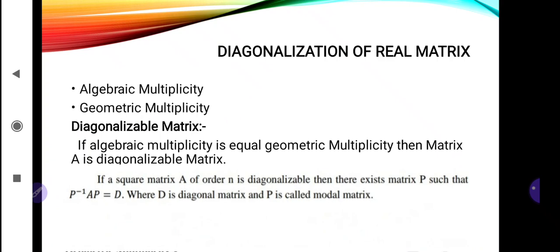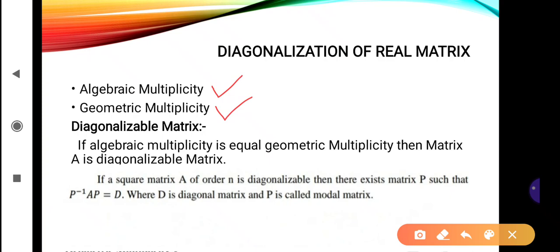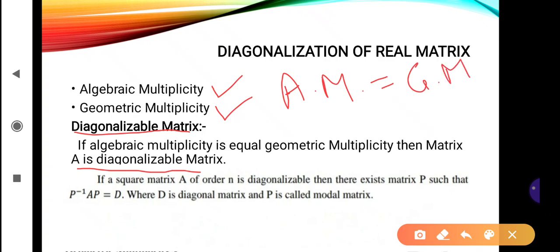The first topic is diagonalization of a real matrix. For this we mainly need the algebraic multiplicity and geometric multiplicity of the matrix. The definition: if algebraic multiplicity equals geometric multiplicity, then matrix A is called a diagonalizable matrix. If a square matrix A of order n is diagonalizable, then there exists a matrix P such that P inverse AP equals capital D, where D is a diagonal matrix and P is called the modal matrix.